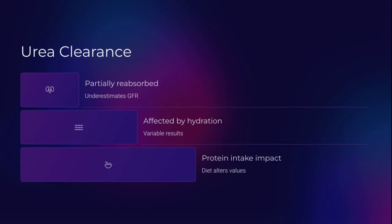Urea clearance underestimates GFR due to partial reabsorption. It fluctuates with hydration and protein intake. Still useful, but not alone — always interpret in clinical context.